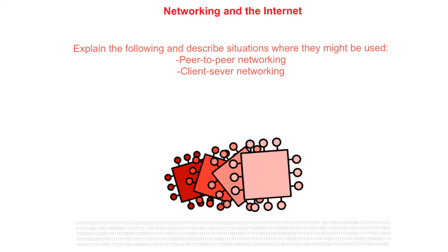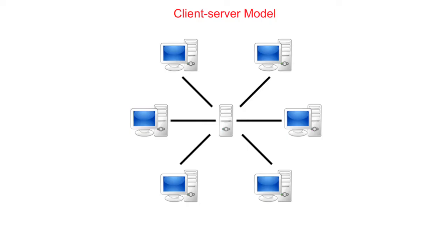In this video, we take a look at the difference between a client-server network architecture and a peer-to-peer architecture. Client-server is the most common model in networking. In this model, one device, the client, requests services from another device, the server. It neatly separates functions, allowing efficient allocation and use of resources.